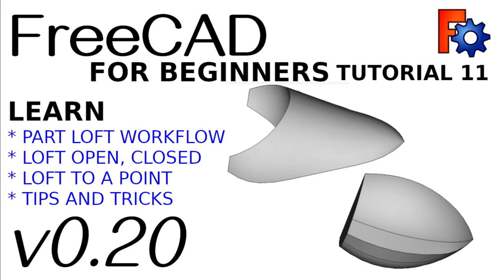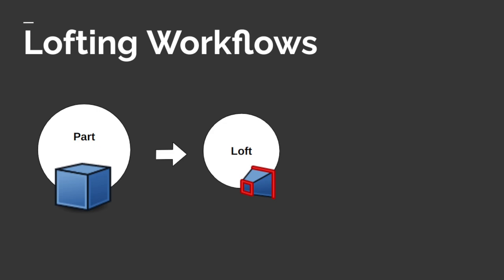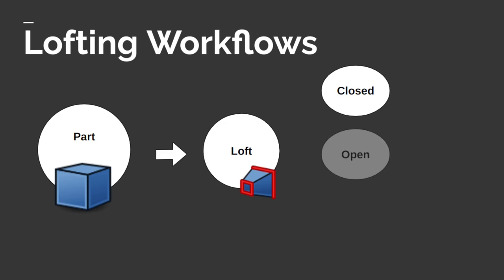Hi everyone and welcome back. We're on episode 11 of Learning FreeCAD for Beginners. We'll teach you the fundamentals of FreeCAD from a beginner's perspective while we understand the multiple workflows in FreeCAD. In today's tutorial we're going to be exploring lofts. We're going to be using the part workbench and the loft function in there. The reason why we're using the part workbench is because it allows for open and closed geometry for our lofting. Concepts that we'll be teaching in the part workbench can be applied to the part design as well, as long as we're using closed sketches. We're going to start off with some closed geometry and learn how to loft through a number of circles and understand the concepts of lofting.